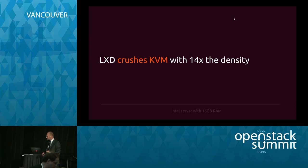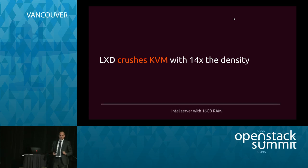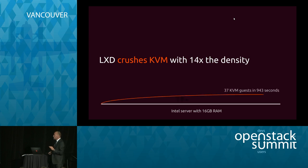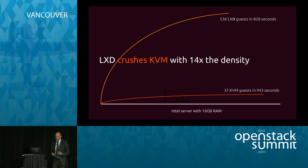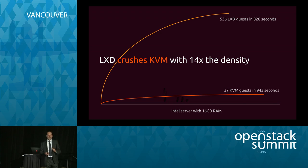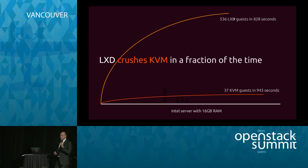To give you some pictures: we took an Intel server with 16 gig of RAM, and on that server we were able to launch 37 KVM guests — full Ubuntu guests, responsive, not Cirrus, not a fake little test OS — that's the real thing. On that same machine, 536 LXD guests, again full Ubuntu machines with SSH running, with applications running, Gettys, and with Docker running inside them. Extraordinary density and performance. We launched those 536 containers in less time than KVM launched those 37 virtual machines.